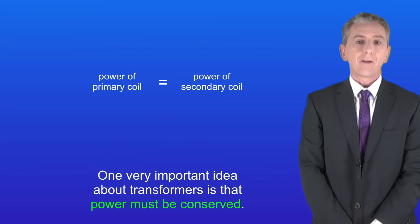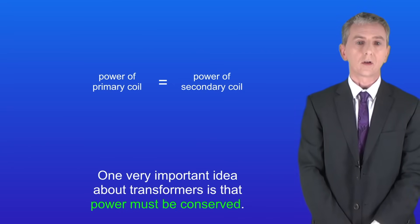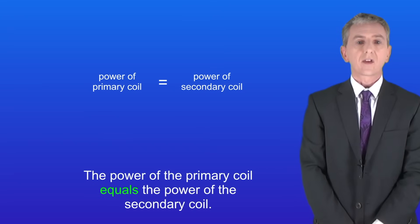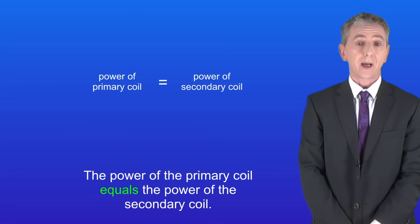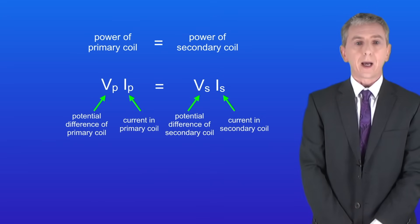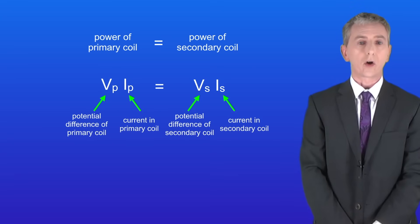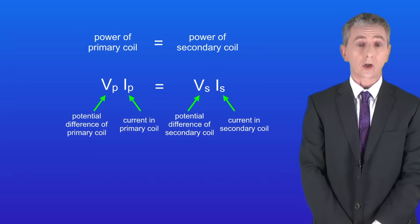One very important idea about transformers is that power must be conserved. In other words, the power of the primary coil equals the power of the secondary coil. We calculate power by multiplying the potential difference by the current, so: Vp × Ip = Vs × Is. You are given this equation in the exam.